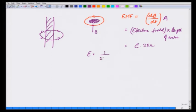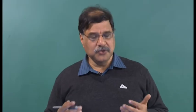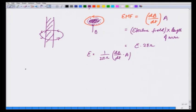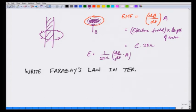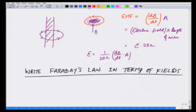So E comes out to be (1/2πr) × (dB/dt) × area. Does it mean that the electric field is only in that wire, or does it exist everywhere? If I put the wire in the inner loop, current flows there too — that means the electric field is generated there also. So what we are going to do now is turn these equations into a form written in terms of fields, so that the law becomes independent of whether I am putting a wire there or not.